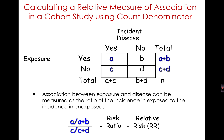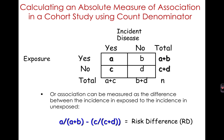To calculate a relative measure of association in a cohort study using the count denominator, we divide those two incidence measures: A over A plus B divided by C over C plus D. Those risks divided by each other become a risk ratio, also often called a relative risk. From the same data layout, an association can be measured as the difference between the incidence in the exposed and the incidence in the unexposed — that's called a risk difference. So we're subtracting instead of dividing.